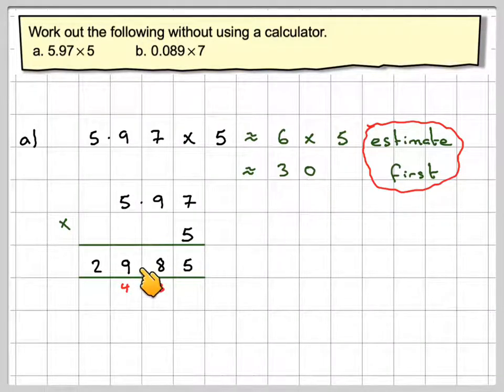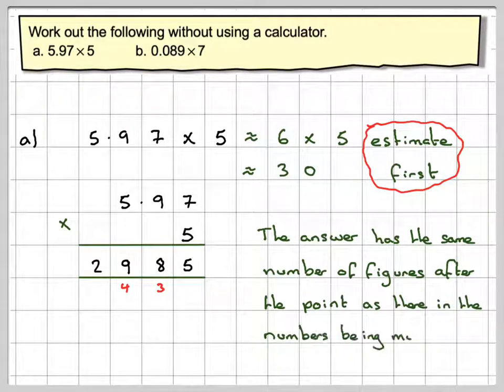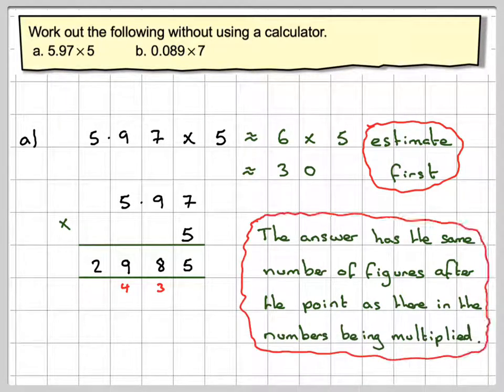Now you can see here we've got 29.85. So obviously the answer is going to be 29.85. But there's a little rule that we can consider. The answer has the same number of figures after the point as there is in the numbers being multiplied together.